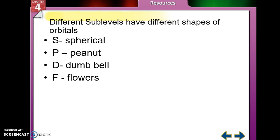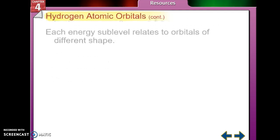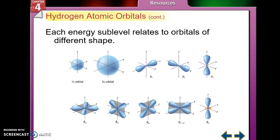They're also shaped differently. The S sub-level is shaped like a sphere, the P sub-level is shaped like a peanut, the D sub-level is shaped like a dumbbell, and the F sub-level is shaped like flower petals.